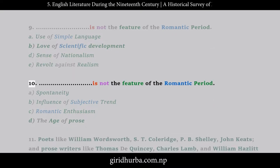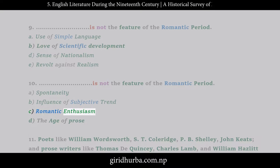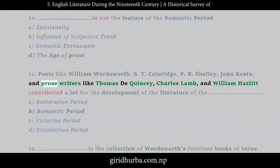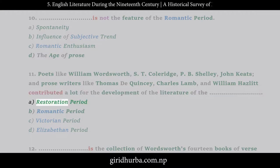Question 10: __ is not a feature of the Romantic period. A. Spontaneity, B. Influence of subjective trend, C. Romantic enthusiasm, D. The age of prose. Question 11: Poets like William Wordsworth, S.T. Coleridge, P.B. Shelley, John Keats, and prose writers like Thomas De Quincey, Charles Lamb, and William Hazlitt contributed a lot for the development of the literature of the: A. Restoration period, B. Romantic period, C. Victorian period, D. Elizabethan period.